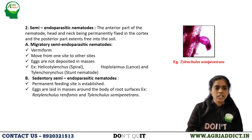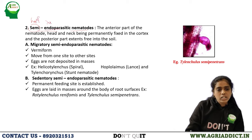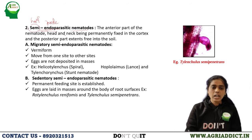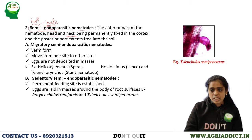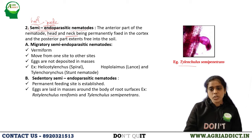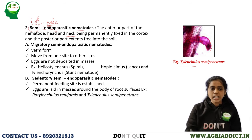Semi-endoparasitic nematodes: 'semi' means half and 'endo' means inside — so half of the body, that is the head and neck, will be inside the plant tissue while the remaining posterior part stays outside. This is seen in the citrus nematode. These have again been classified into two types: migratory semi-endoparasitic and sedentary semi-endoparasitic nematodes.